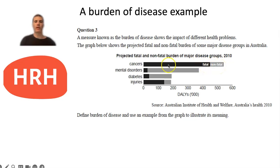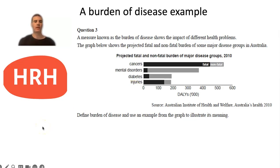If you look at mental disorders on the graph, there's a much smaller contribution of YLLs than YLDs — so different conditions can contribute in different ways. Both YLL and YLD contribute to DALYs for different conditions but sometimes in different proportions. The exam question for that year asked students to define burden of disease and use an example from the graph to illustrate its meaning, so it's important you understand the components of burden of disease and can use graph data to demonstrate that understanding.